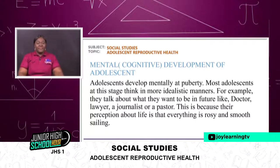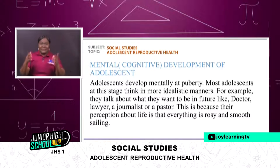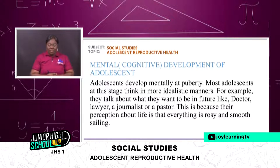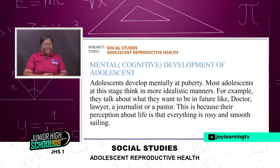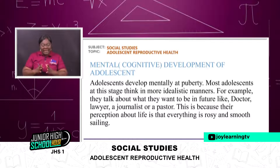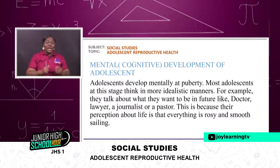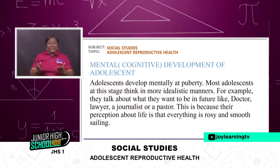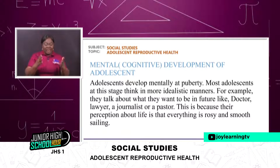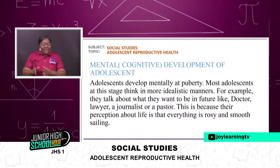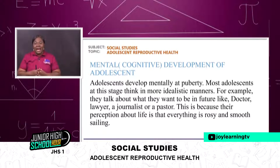Now let's look at the mental or cognitive development of adolescence — how the adolescent thinks and behaves cognitively with the mind. Adolescents develop mentally at puberty. Most adolescents at this stage think in a more idealistic manner; for example, they talk about what they want to be in future — like wanting to be a doctor, lawyer, journalist, or pastor. This is because their perception about life is that everything is rosy and smooth.